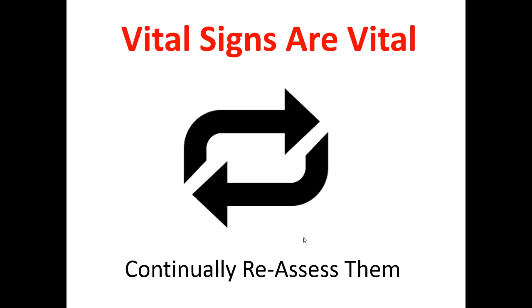As you're controlling bleeding and managing the airway, remember that vital signs are vital. Any episodes of hypotension or hypoxia in the field can indicate a high rate of mortality. Keep a close eye on heart rate, mental status, and blood pressure — that's going to tell you how that patient is doing. If you have time, just one set of vitals is enough, but if you have more time, continue to reassess and monitor trends.